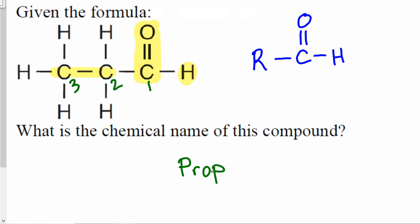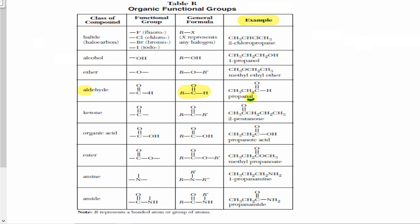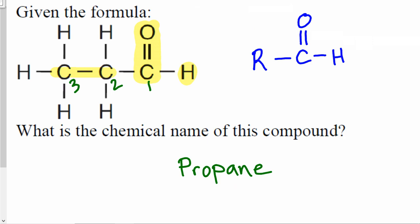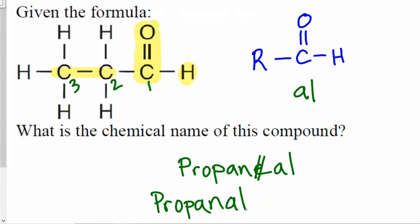I suggest you assume that it's an alkane before naming any functional group — it makes things much easier. So instead of writing just 'prop,' I would write 'propane,' assuming it's an alkane. However, it is not an alkane; it is an aldehyde. Aldehyde names end with the two letters AL. So I'm going to erase the last letter E and replace it with AL. Therefore, the final chemical name for this compound is propanal. Remove the last letter and replace it with the letters that represent the functional group.